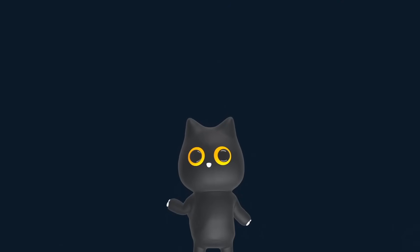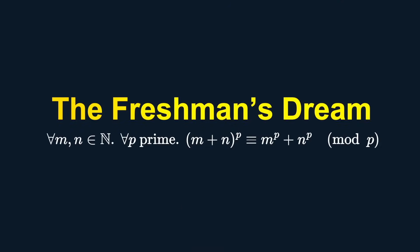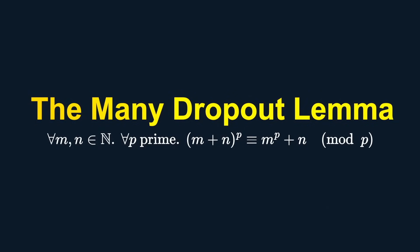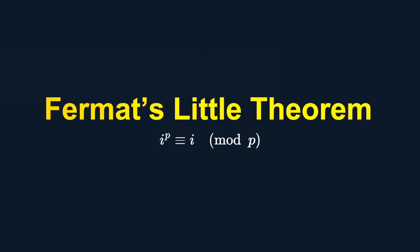Great! Well, now you can understand these theorems with funny names. The Freshman's Dream, the Dropout Lemma, the Many Dropout Lemma, and the famous Fermat's Little Theorem that is totally not little at all.